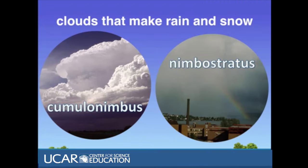A couple of the cloud types are known to make rain or snow. Cumulonimbus clouds are responsible for thunderstorms. They form when cumulus or altocumulus clouds grow over time.